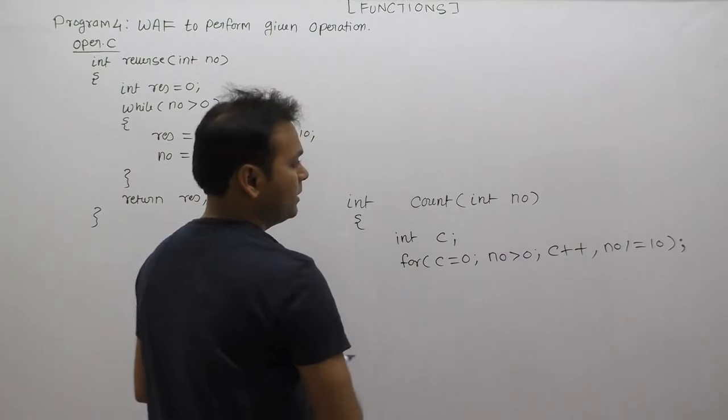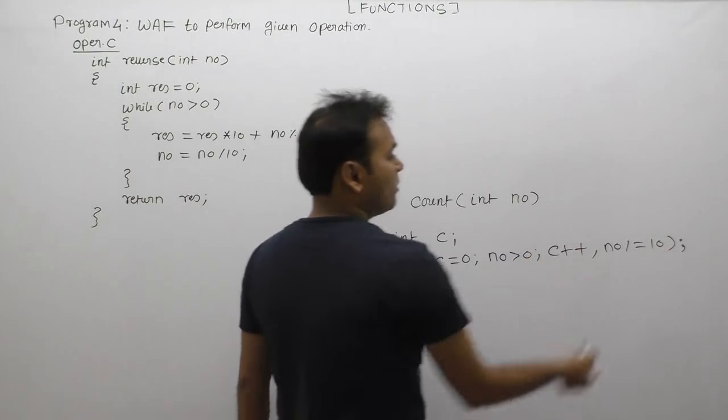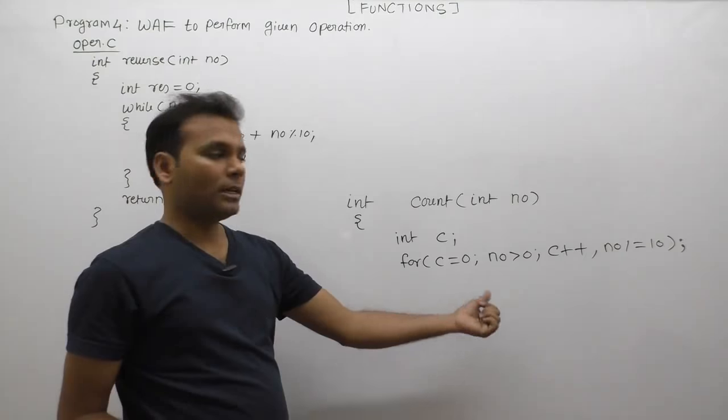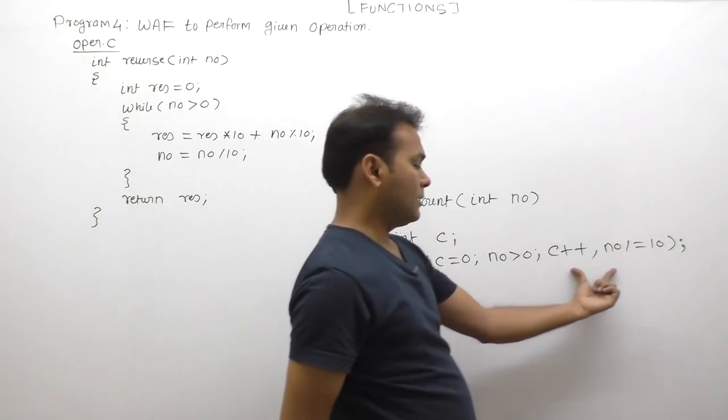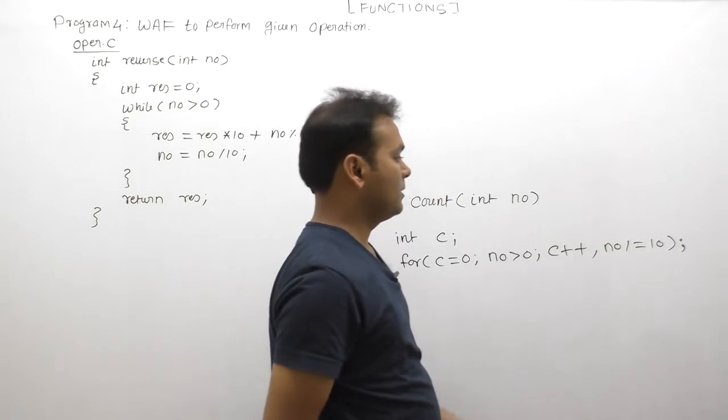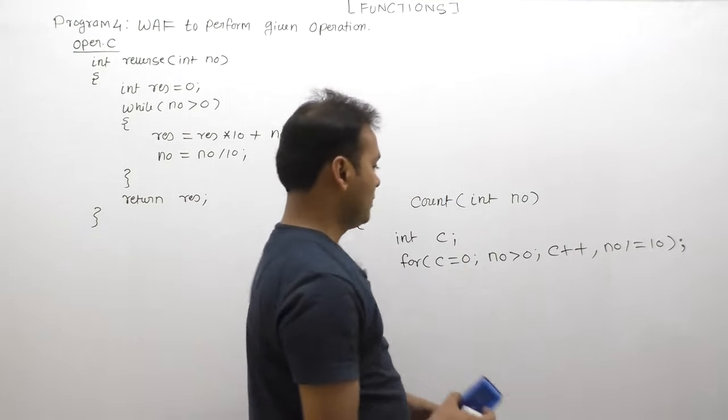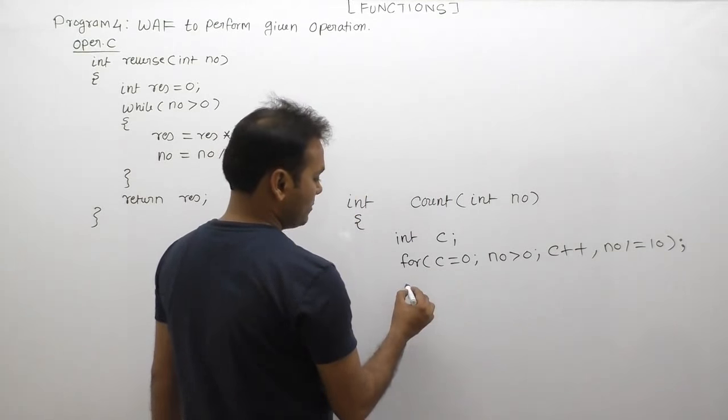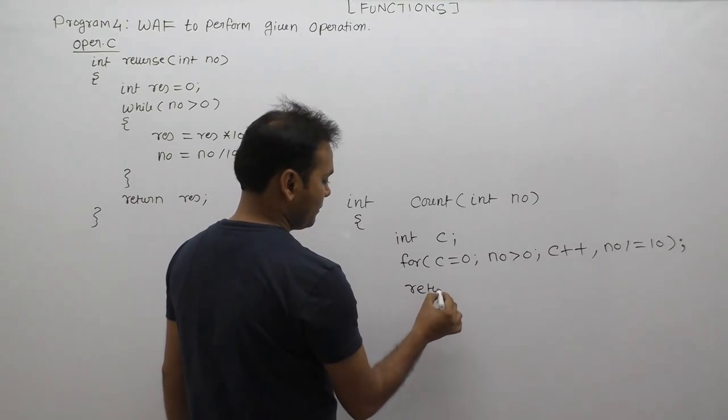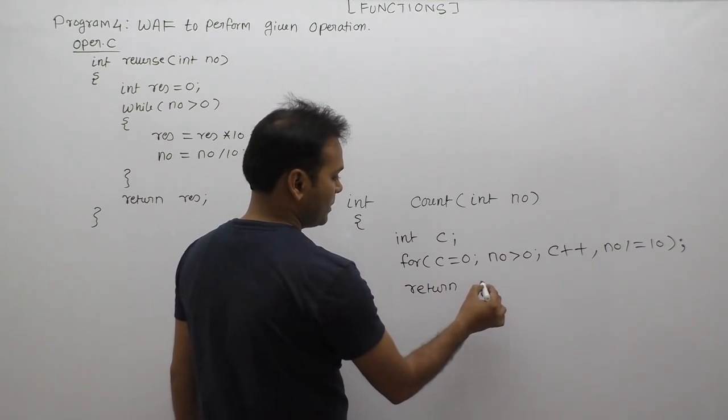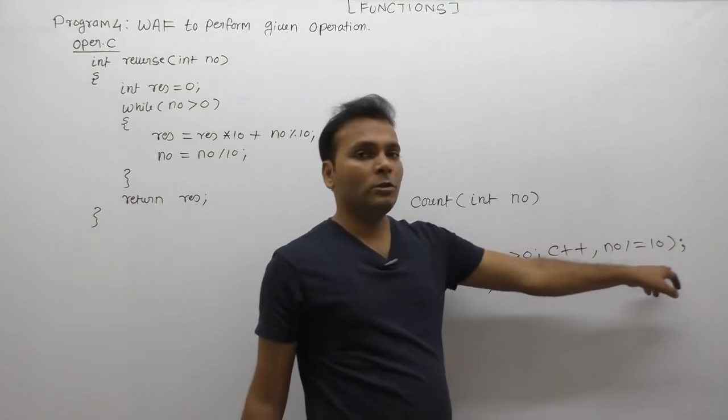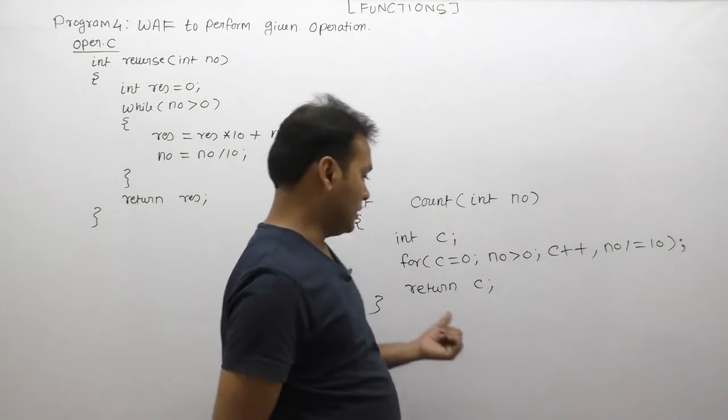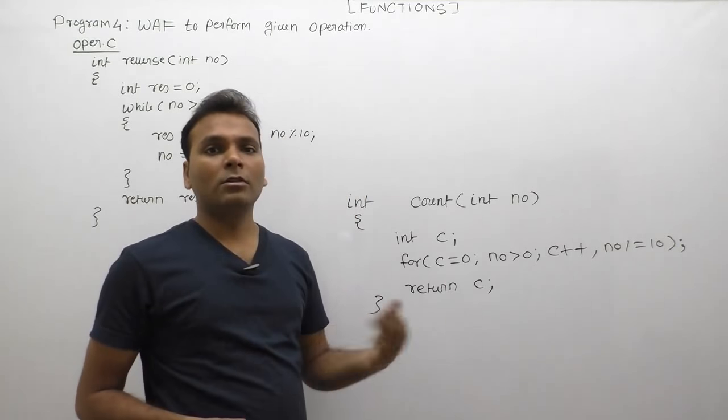Then finally the loop body terminated already by semicolon. Loop will continue until condition becomes false. Initialization one time, then condition testing, then increment/decrement session. First increment will happen, then removing last digit. Finally, function should return c. Remember loop terminate, semicolon because body is empty. Return statement should be outside body of loop.